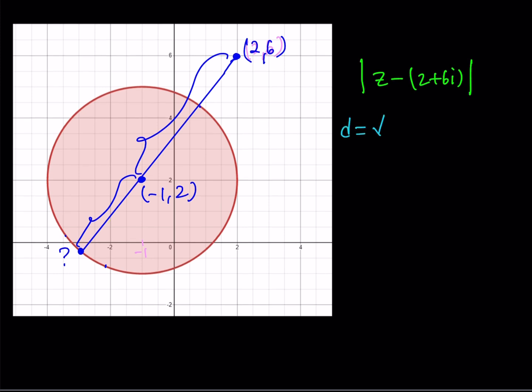The distance formula: subtract the x-coordinates — negative 1 minus 2 is negative 3, square it — then subtract the y-coordinates — 2 minus 6 is negative 4, square it. That's a 3-4-5 triangle, so the distance is 5.